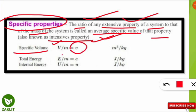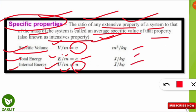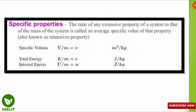Specific total energy is energy divided by mass. Specific internal energy is total internal energy divided by the mass of the system. The units are: specific volume in m³/kg, specific total energy in J/kg, and specific internal energy in J/kg.